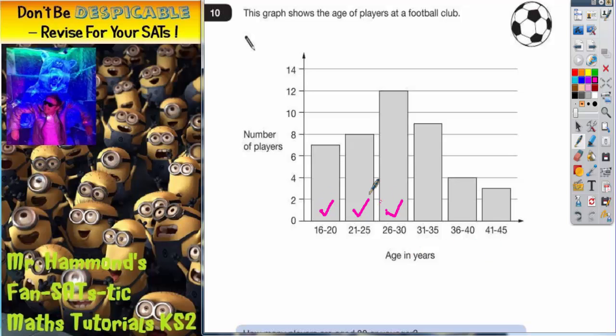So we're only interested in the first three bars. The first bar is halfway between 6 and 8, which would be 7. The first bar is 7 people. The second bar, if you follow it up and look across, is level with 8. The third bar, follow it up to the top and look across, is equal to 12.